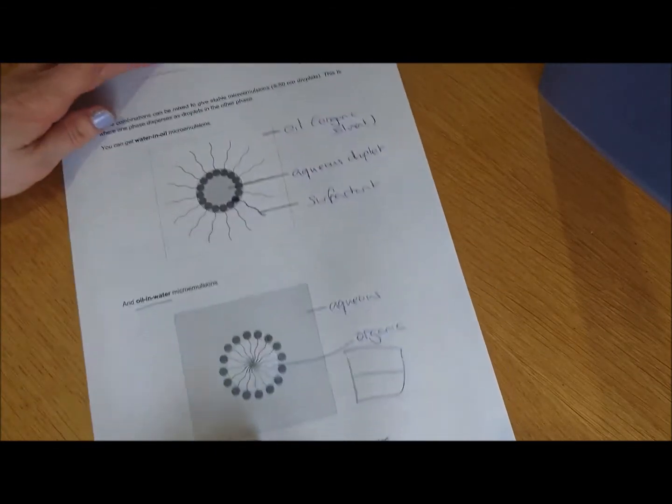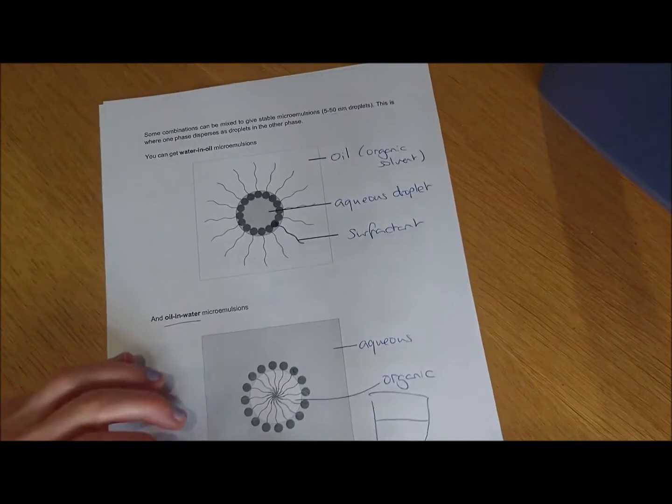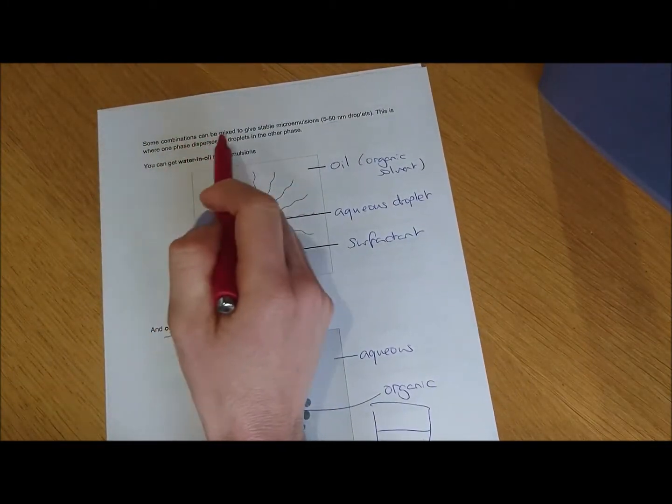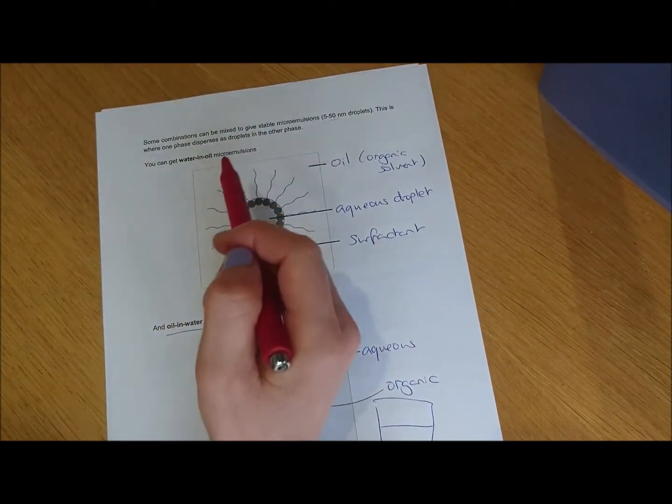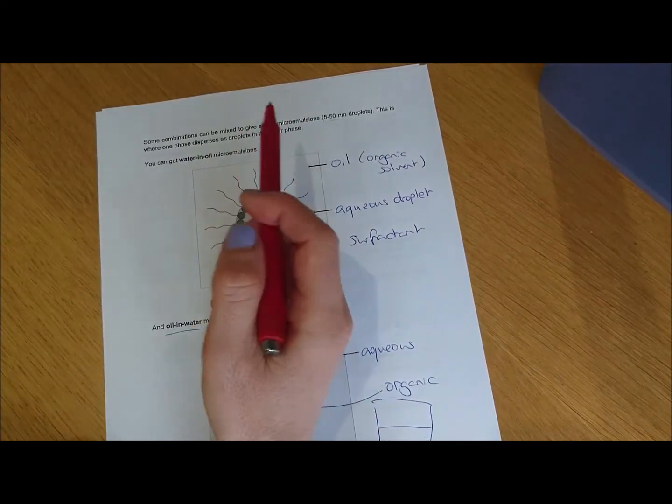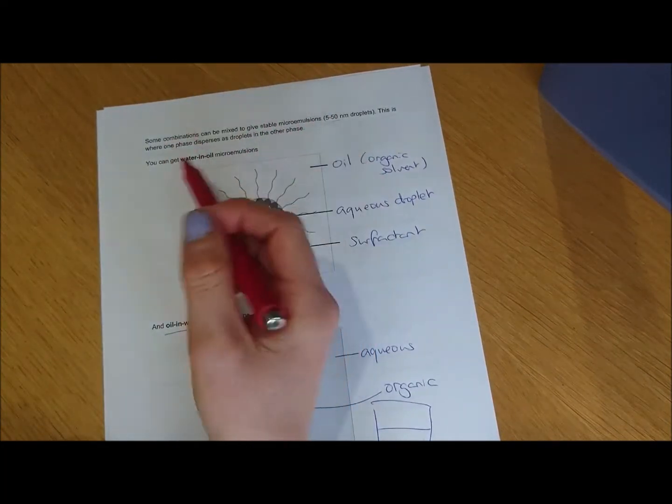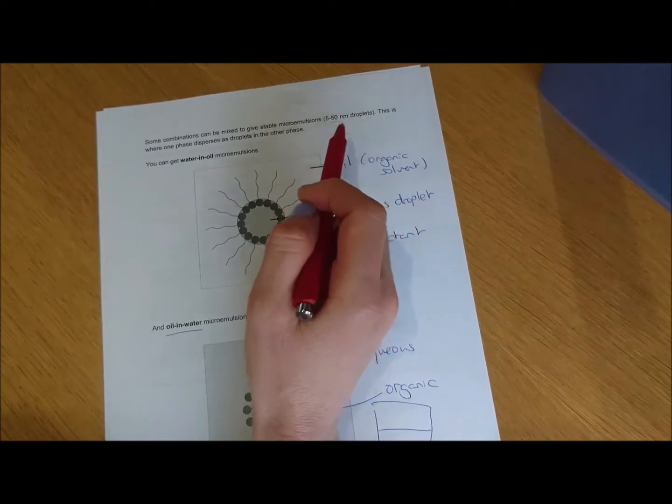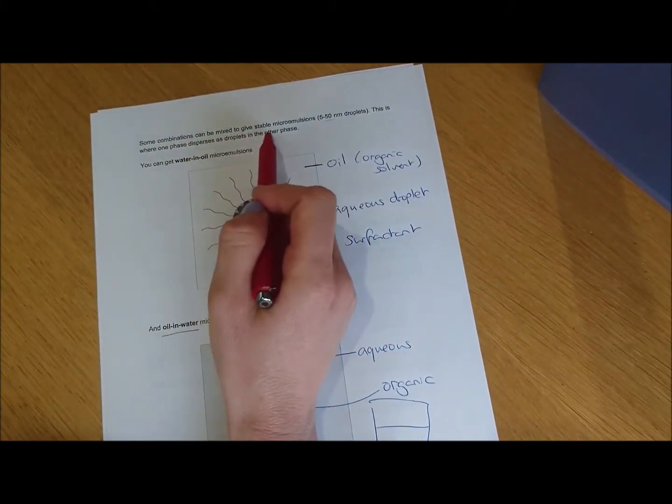Talking about what a microemulsion is, when you have a microemulsion, some combinations of those three phases, so your oil phase, your organic solvent, your aqueous phase, that's your water or your aqueous solution, and your surfactant, some of those combinations can be mixed to give stable microemulsions.